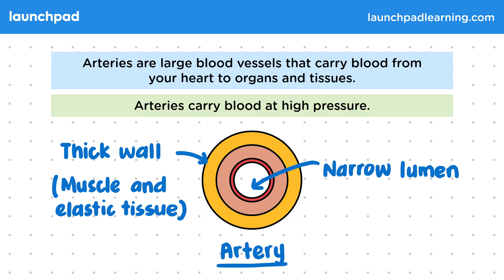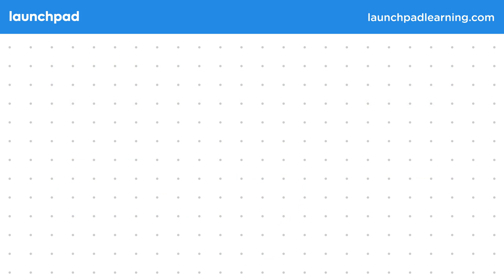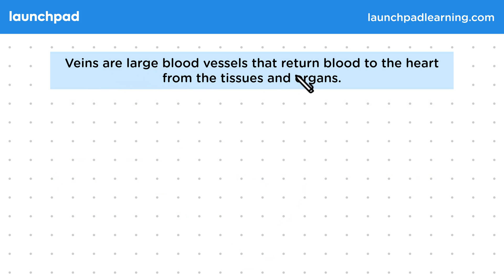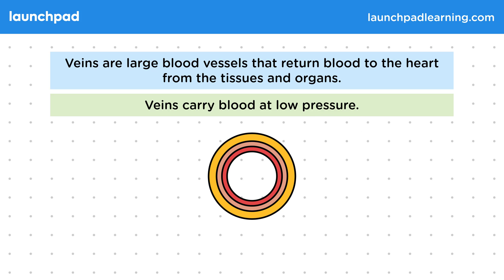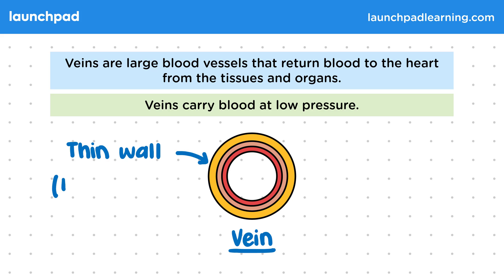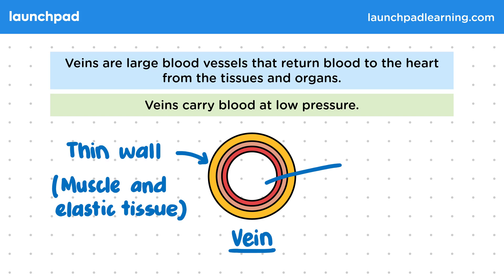Now let's have a look at the role of veins. Veins are large blood vessels that return blood to the heart from the tissues and organs. Veins carry blood at low pressure. This diagram shows a cross section of a vein. This vessel has a thin wall which is made of muscle and elastic tissue like the arteries, however it's thinner than artery walls. Veins have a wider lumen than arteries because they carry blood at a much lower pressure.